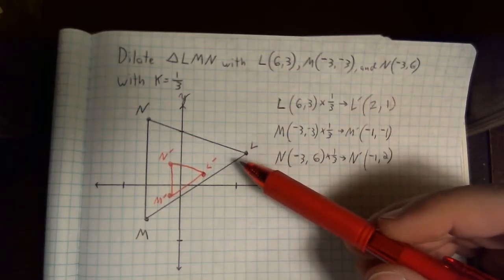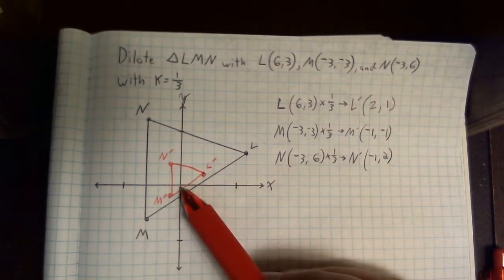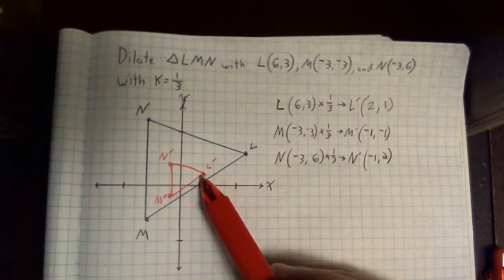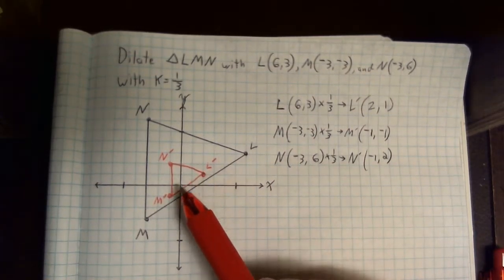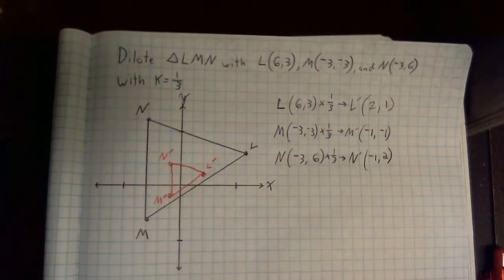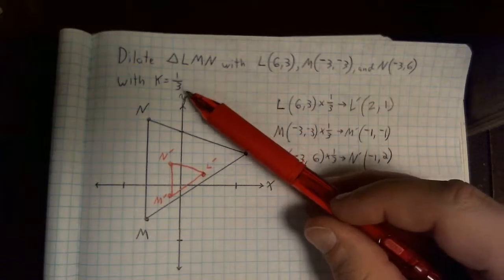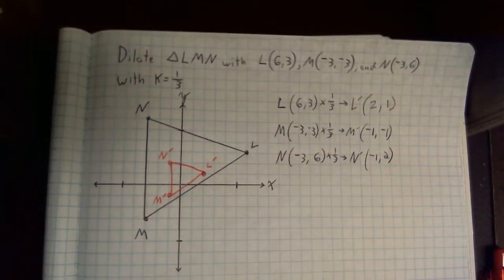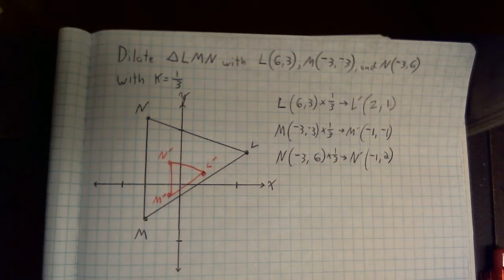And again, we can check out the distances too, right? Here we went up 3 over 6. Now we're only going up 1 over 2. It's 1 third the distance away. And if we were to check that with the rest of these, we would notice again that it's always 1 third, which is what we want. We want it to be 1 third the distance from our origin. So dilations to me, I like them because they're easy to do. Hopefully it's just as easy for you guys. It's mostly just multiplication. All right, that's it for today.